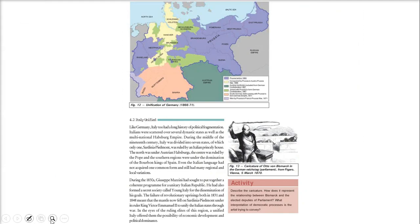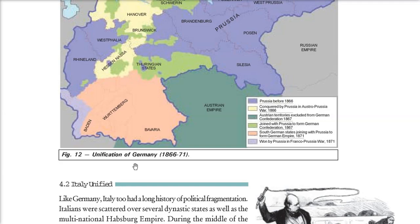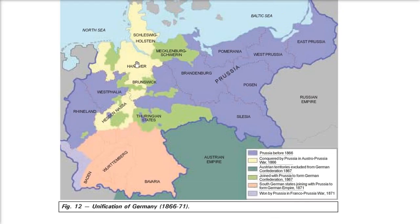Now, how did Italy unify? Before going ahead, let's look at the map. This shows Prussia before 1866. The yellow areas were conquered by Prussia in the Austro-Prussian War of 1866. The greenish areas are Austrian territories excluded from German confederation in 1867. The light green areas joined with Prussia to form the German confederation. The pink areas are the South German states joining with Prussia to form the German Empire in 1871. The remaining area was won by Prussia in the Franco-Prussian War.